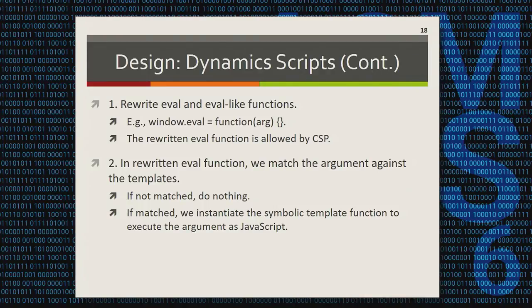Here are the steps. In the rewriting phase, we rewrite all eval and eval-like functions. Note that all the rewriting functions cannot interpret a string as JavaScript code, so they will not be blocked by content security policy. In the runtime phase, whenever eval or eval-like functions are called, our rewriting function is invoked. It first matches the argument string against the templates. If no match, we assume the script is malicious and do nothing. If there is a match, we extract the data from the argument string and use those data to call the corresponding symbolic template functions. The whole process works synchronously, preserving the functionality of eval or eval-like functions.